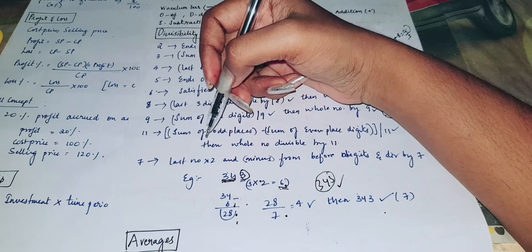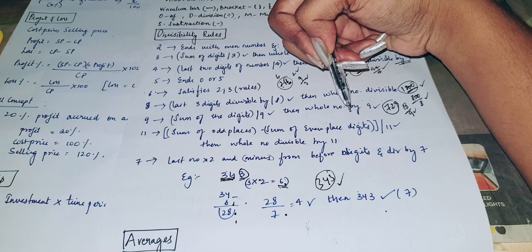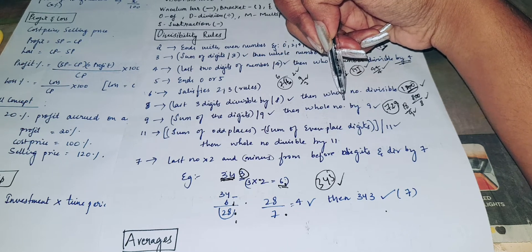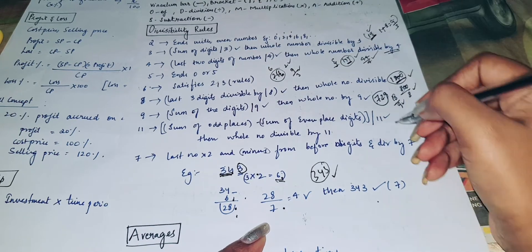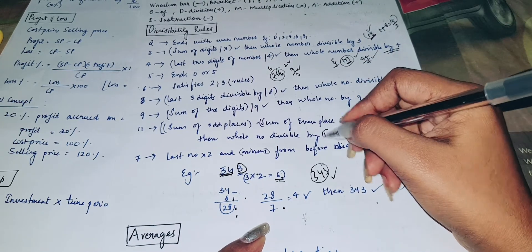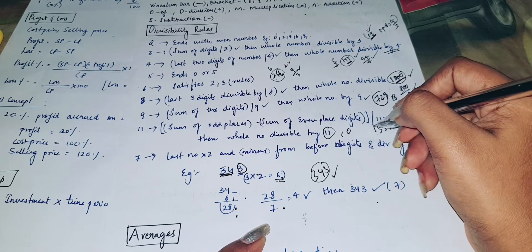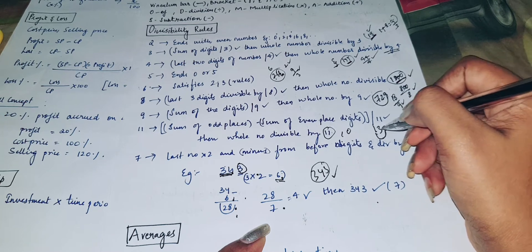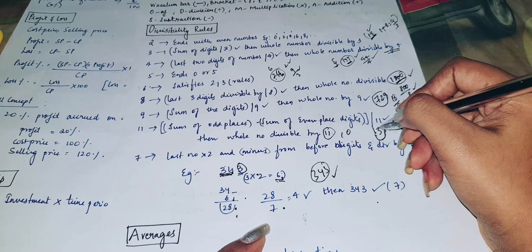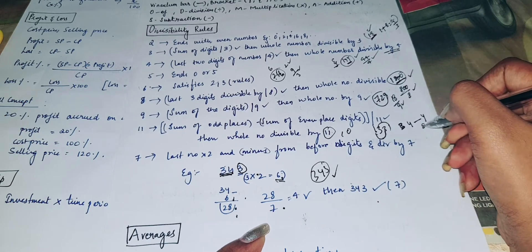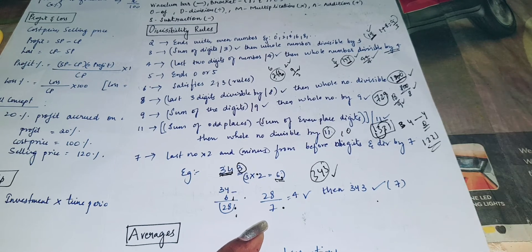And the rule of 11: sum of the odd place digits minus sum of the even place digits. If the difference is either 0 or divisible by 11, then the number is divisible by 11. For example, 1331: odd place digits 1 plus 3 is 4, even place digits 3 plus 1 is 4. 4 minus 4 is 0, so 1331 is divisible by 11.